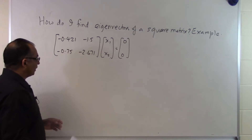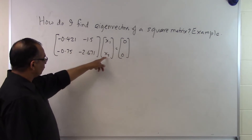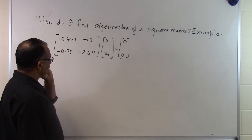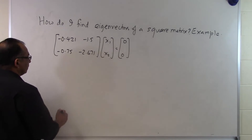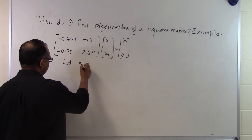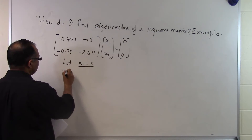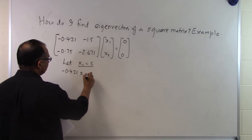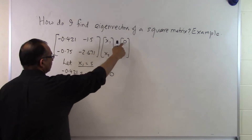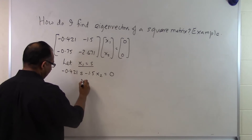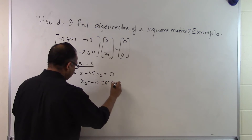We already know that X1, X2 equal to 0 is a solution to this set of equations, but what we are looking for is a non-trivial solution. So we choose X1 equal to S. From the first equation we get minus 0.421S minus 1.5 X2 equal to 0, which gives us X2 equal to minus 0.2808S.